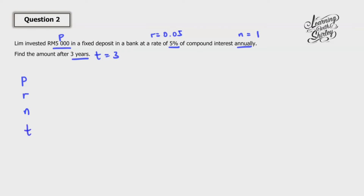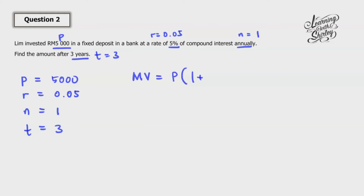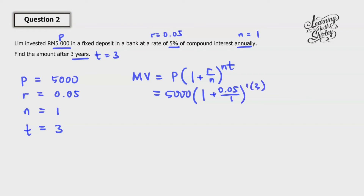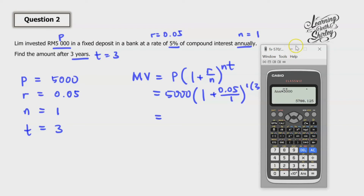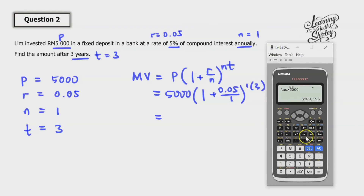Extracting the information: P is 5000, R is 0.05, N is 1 because it's annually, and T is 3 because it's after 3 years. Now we put them into the formula: MV = P(1 + r/n)^(nt), which gives us 5000 times (1 + 0.05/1)^(1×3).